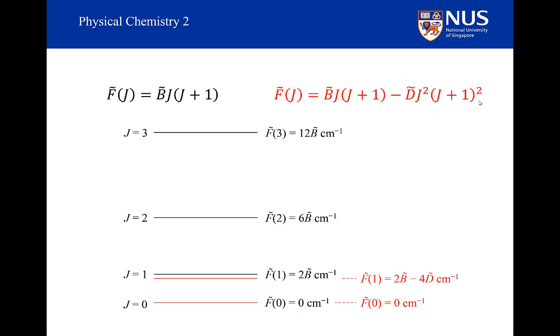But if J equals 1, my energy term is now not 2B as it was in the rigid rotor, but 2B minus 4D. If J equals 2, my energy term is no longer 6B, it is now 6B minus 36D. The next one will be 12B minus 144D.